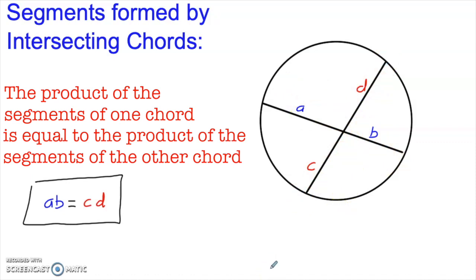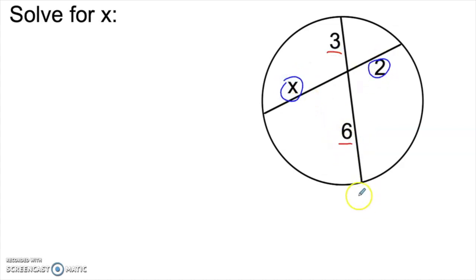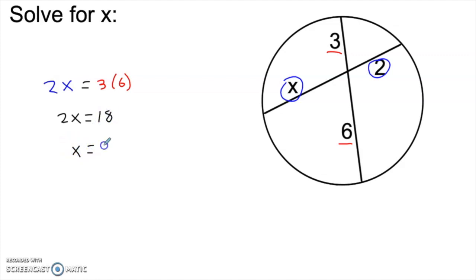Let's take a look at a few examples of how we can apply this, and then I'll show you why this relationship is true. Here's a pretty straightforward application. We have a circle with two chords that intersect, and we're given the lengths of some of these segments. The first thing I'd like to do is identify which segments belong to the same chord — 3 and 6 are the segments of the other chord. Since the product of the segments of one chord has to equal the product of the segments of the other chord, 2x is equal to 18, and x equals 9.